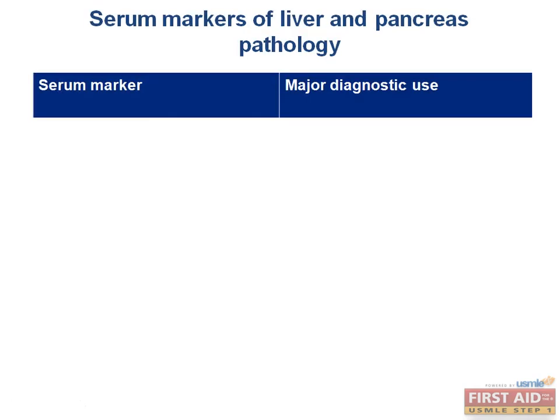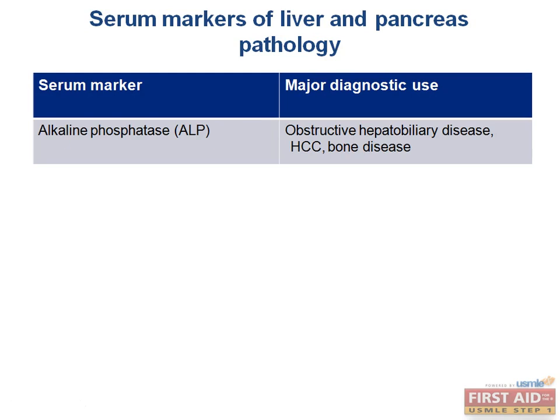Let's go over some of the important blood labs in liver and pancreas pathology. These are important both for the boards and for your upcoming clinics. Alkaline phosphatase, or ALP, rises in obstructive liver disease, such as hepatocellular carcinoma or bile duct disorders. However, it is also elevated in bone diseases, so it's not uniformly specific.